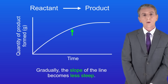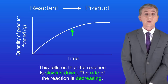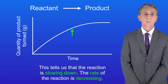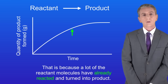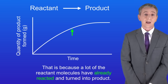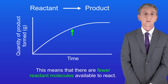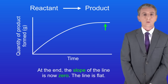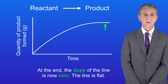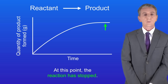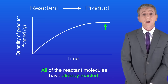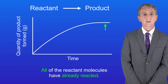Gradually the slope of the line becomes less steep, which tells us that the reaction is slowing down — in other words the rate of the reaction is decreasing. That's because a lot of the reactant molecules have already reacted and turned into product, meaning there are fewer reactant molecules available to react. At the end we can see that the slope of the line is now zero — the line is flat — telling us the reaction has stopped because all of the reactant molecules have already reacted.